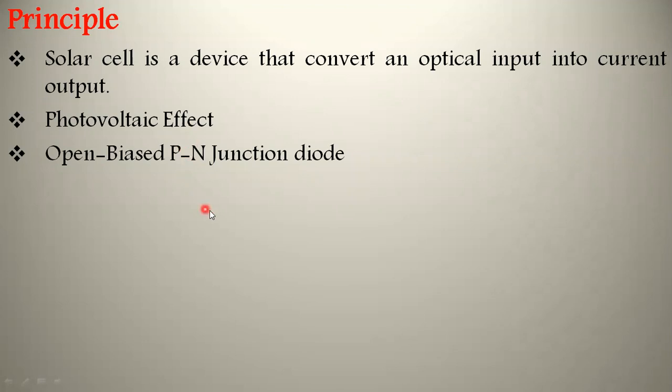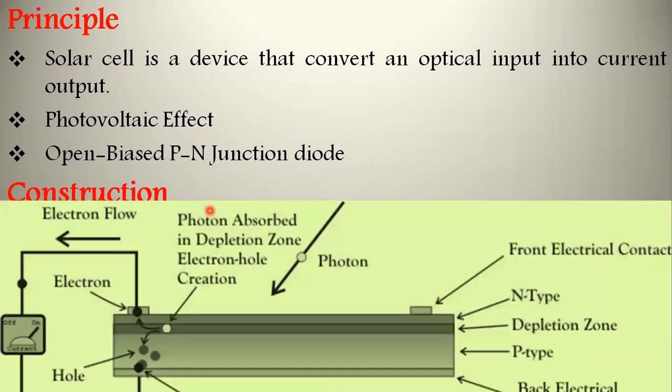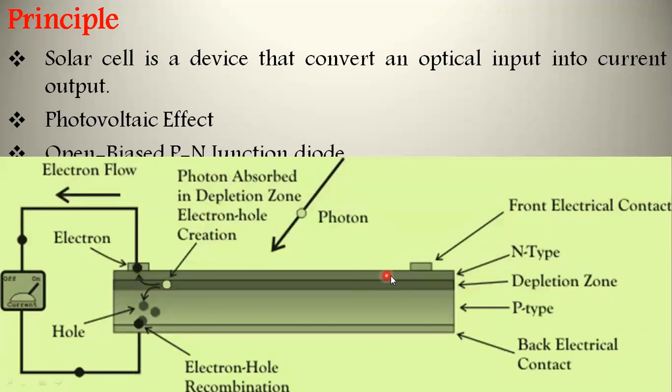Coming to the construction, the solar cell comprises p-type and n-type semiconductors with different electrical properties joined together. The joint between these two semiconductors is called the p-n junction. The top layer is n-type semiconductor and its thickness is thin compared to the bottom p-type semiconductor layer, so that incident photons may easily reach the p-n junction.